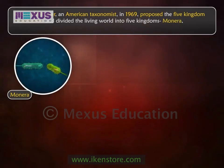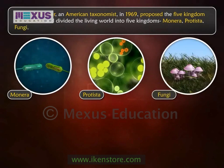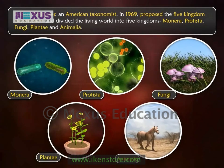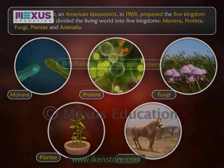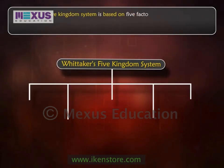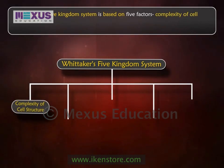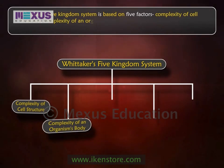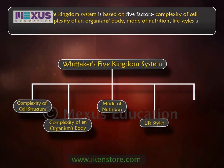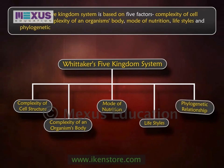The five kingdoms are: Monera, Protista, Fungi, Plantae, and Animalia. Whittaker's five kingdom system is based on five factors: complexity of cell structure, complexity of an organism's body, mode of nutrition, lifestyles, and phylogenetic relationships.